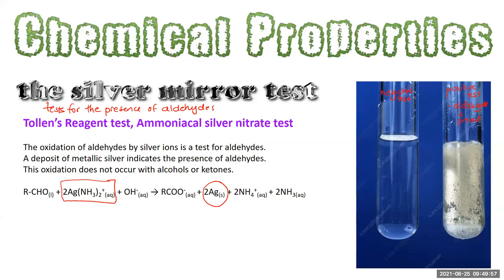A negative Tollens test — the ammoniacal silver nitrate test — gives nothing: no silver mirror. This is what you would observe for a ketone, but also for any alcohol whether primary, secondary, or tertiary.